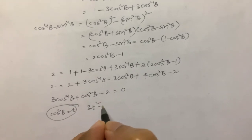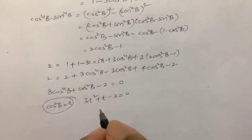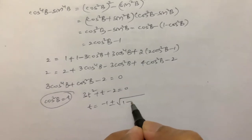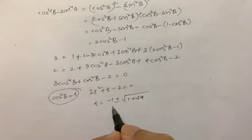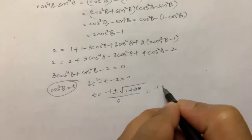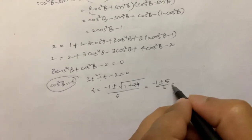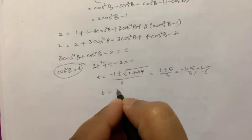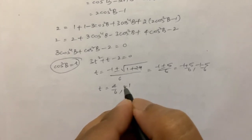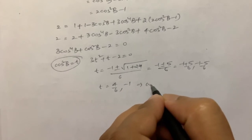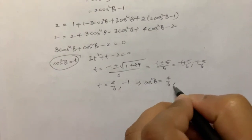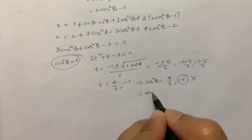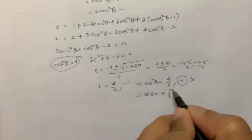Solving 3t² + t - 2 = 0, we get t = (-1 ± 5) / 6. So t = 4/6 = 2/3 or t = -1. Since t = cos² B, t = -1 is not acceptable. Therefore cos² B = 2/3, giving cos B = ± root(2/3) = ± √2 / √3.